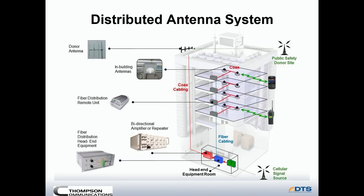Here's a block diagram of a DAS system. It starts out with the donor antenna, which is called a YAGI. This is a very directional antenna and points directly at the donor site. This is a public safety site in this particular drawing. This DAS system also has cellular, and that donor site is indicated down here. Once the signal comes in through the donor antenna, it travels through coax down to the BDA or the repeater.